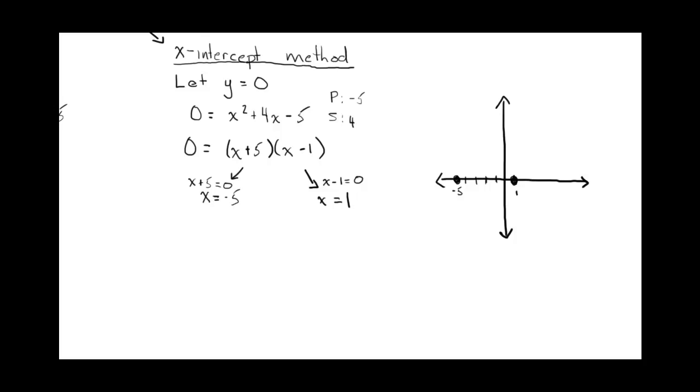So we know that these are two x-intercepts. Now the question is, where is the rest of the parabola? We know it's going up because there's no negative in front of the x-squared.